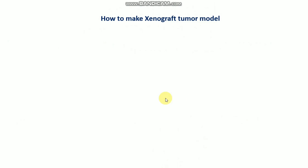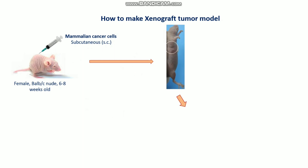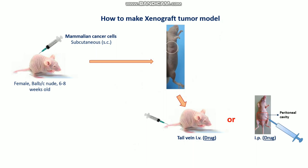So how do you make a xenograft tumor model? First, you need to select female BALB/c nude mice that are 6 to 8 weeks old. Then, keep the mice for 2 to 3 days for adaptation. After that, inject the mammalian cancer cells via the subcutaneous route — just under the skin. When you can detect a mass of tumor, inject the drug candidate either through tail vein injection or intraperitoneal injection; both are acceptable and can induce an anti-cancer effect.